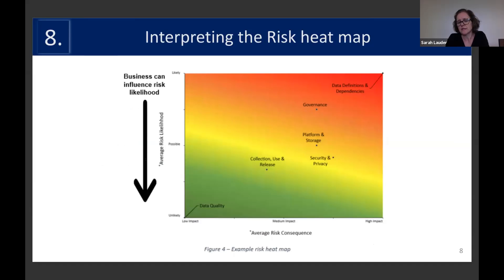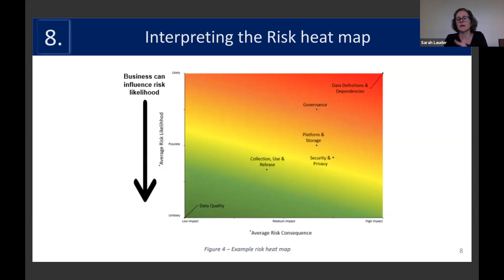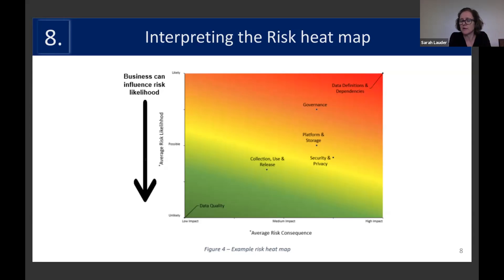The way to interpret the heat map is: across the x-axis is consequence — the further to the right, the greater the impact to your business area if you don't put any controls in place, so the things on the right should be more important to you. The y-axis is likelihood of these risks being realised, and you're hoping to drive things down by the actions you take — trying to get down to lower on the chart. Some risks obviously can't be fully mitigated, so the heat map gives a snapshot of where you should be focusing your energies.